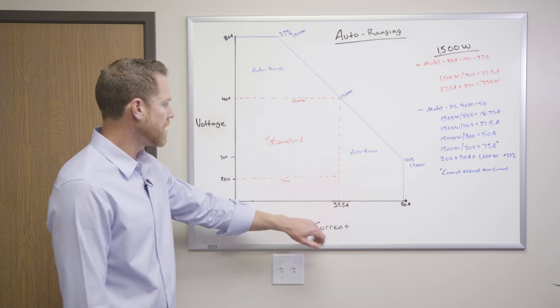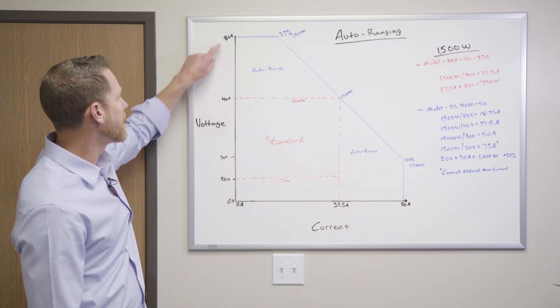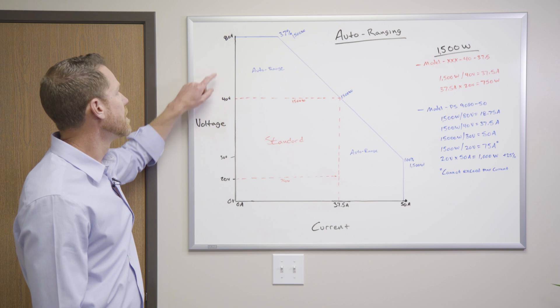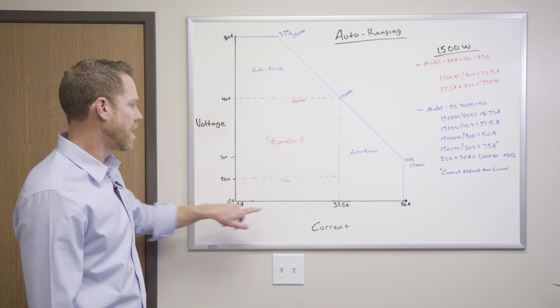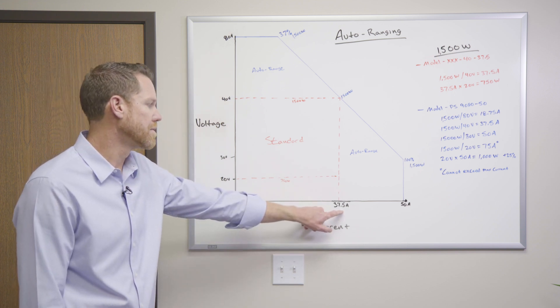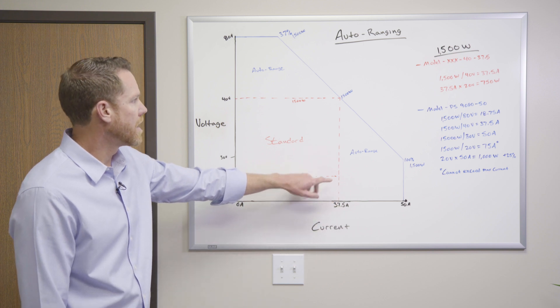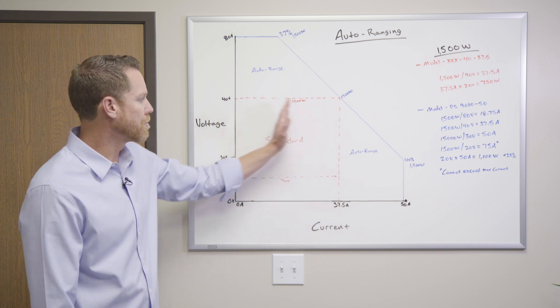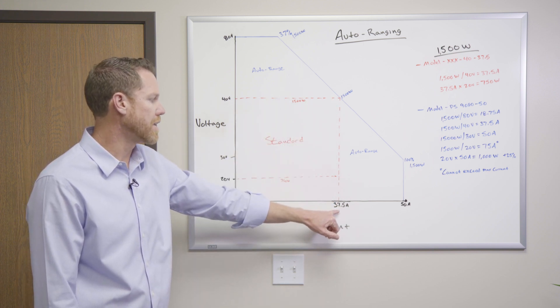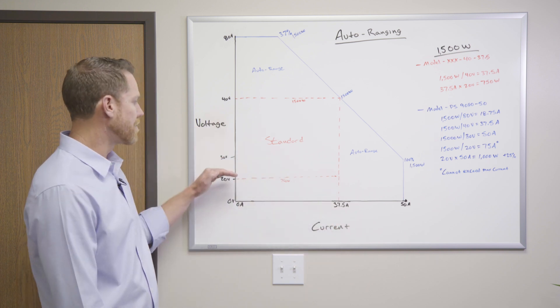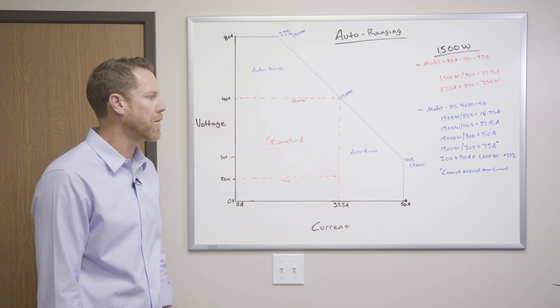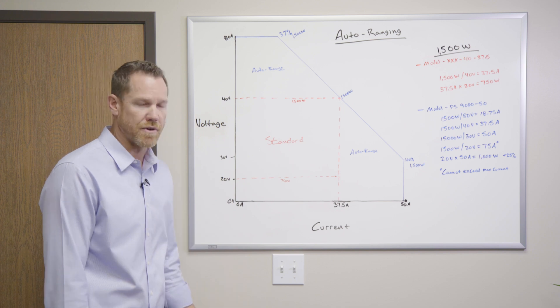So you can see here from this diagram, we have a, for instance, a 40 volt source and a 37 and a half amp output. And depending on where you program, that same 37 and a half amps stays consistent. So as you program down in voltage, the actual power output tends to decrease.